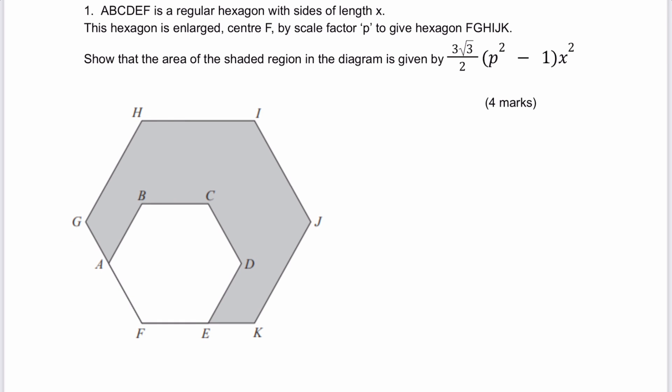The key issue with this is we've got a regular hexagon. So if we look at the area of a regular hexagon, which happens to be ABCDEF, that's made up actually of six equilateral triangles.